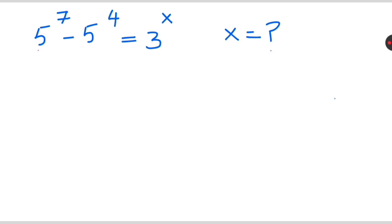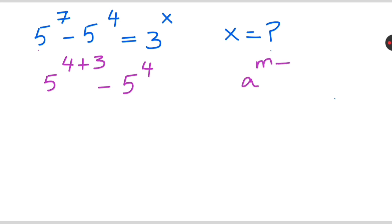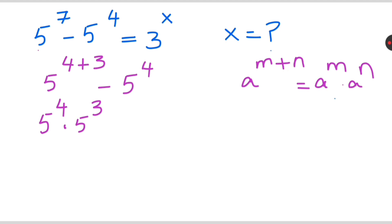Here, 5 raised to 4 of 7 — we can write 7 in terms of 4, that is 4 plus 3. So now 5 raised to 4 of (4 plus 3) is in the form of a raised to 4 of (m plus n). We can write this as a raised to 4 of m times a raised to 4 of n. So we get 5 raised to 4 of 4 times 5 raised to 4 of 3, minus 5 raised to 4 of 4.